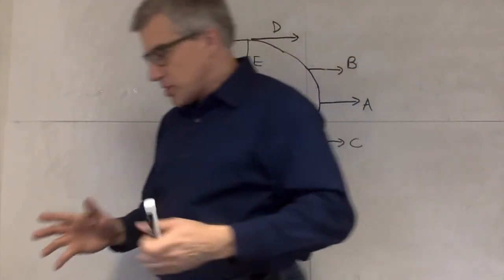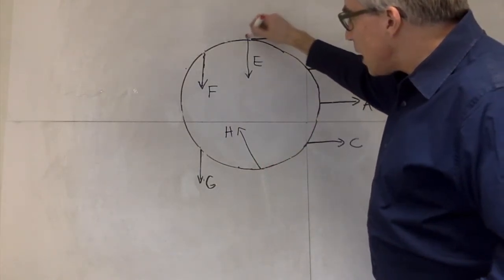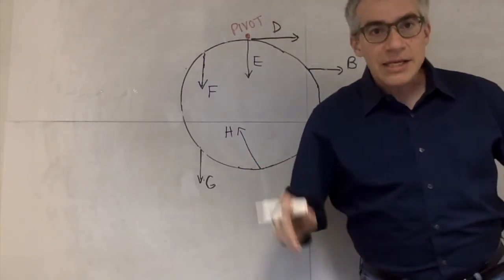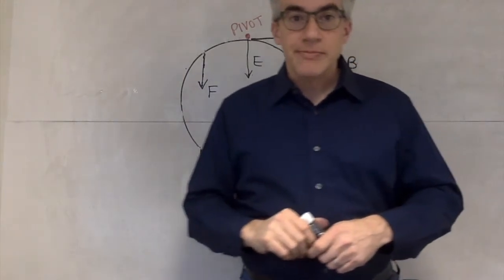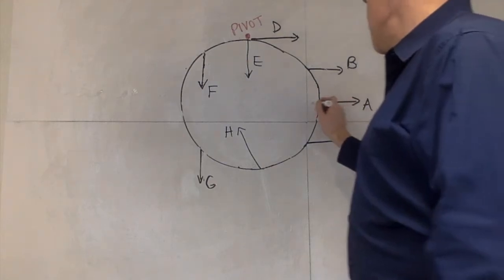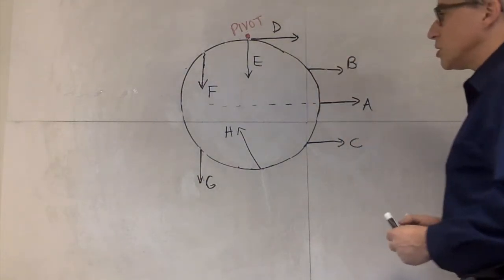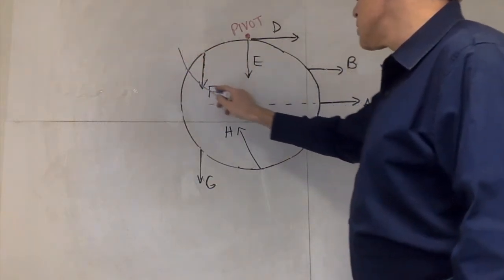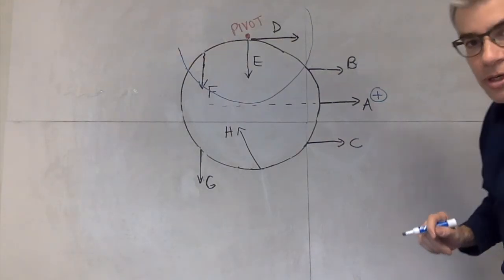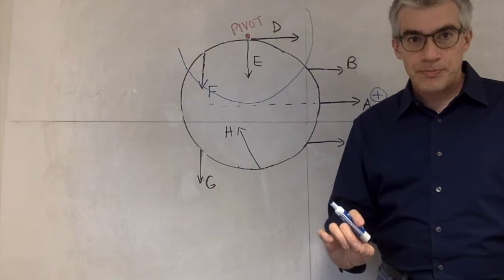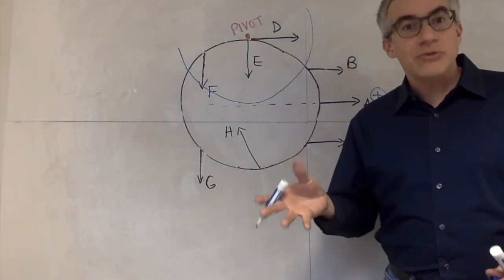Now we'll put another change in the problem: suppose the pivot point is not in the center. What if the pivot point was here at the top? That is going to change some of our answers, because relative to that pivot, some torques might have switched from positive to negative or vice versa. Note that the grand sum of the torques will not depend on the choice of pivot — if it's zero with one choice of pivot, it'll be zero with another, because either there's a twist or there isn't.